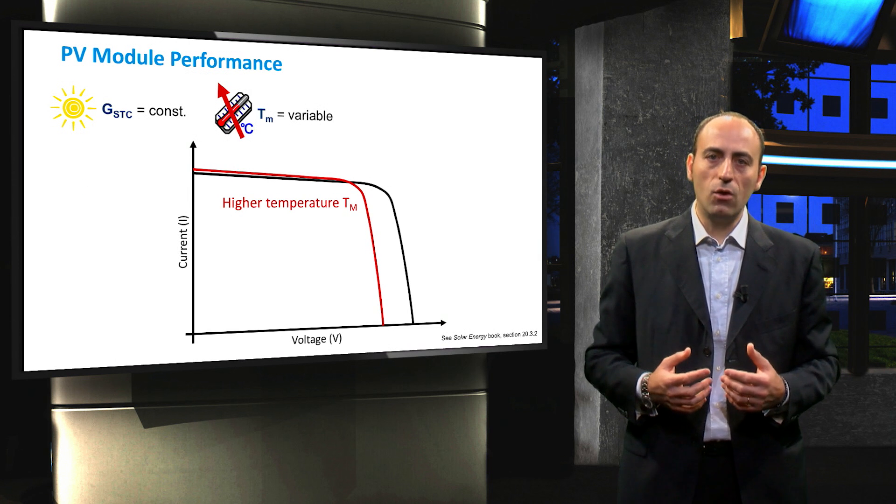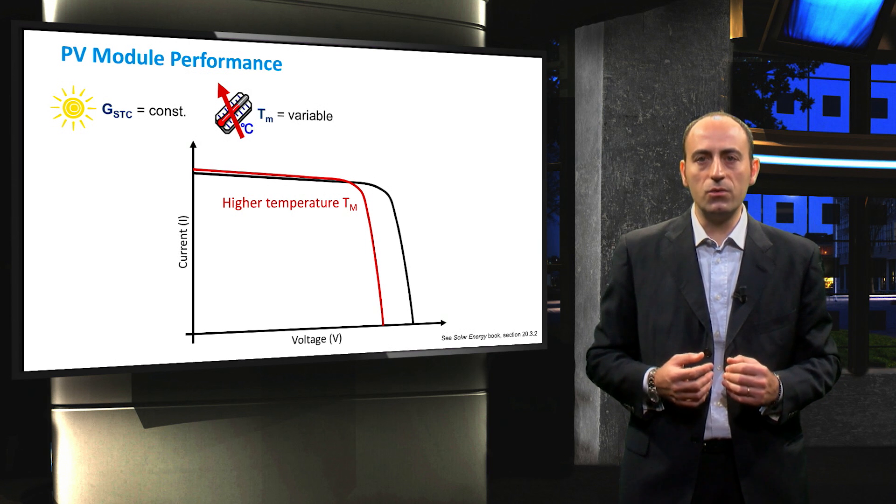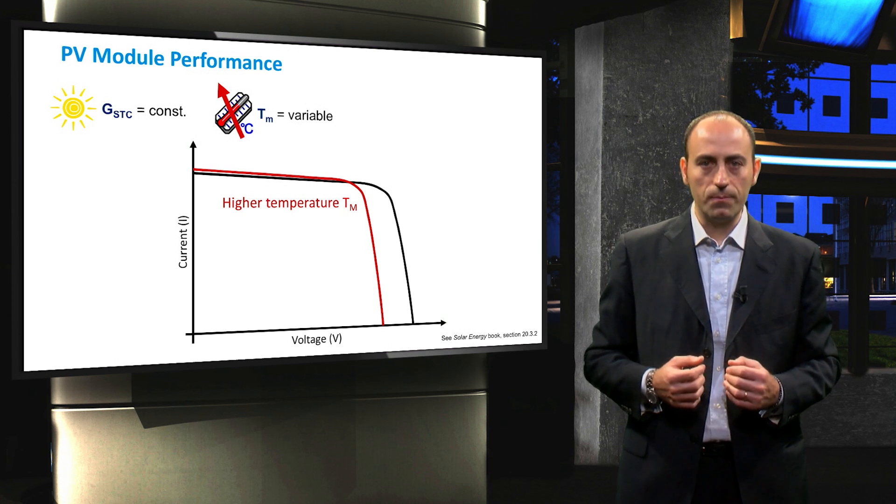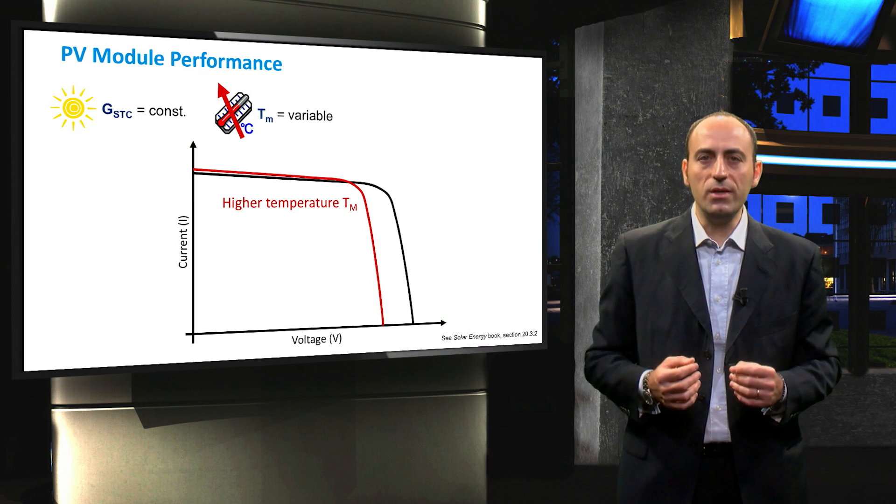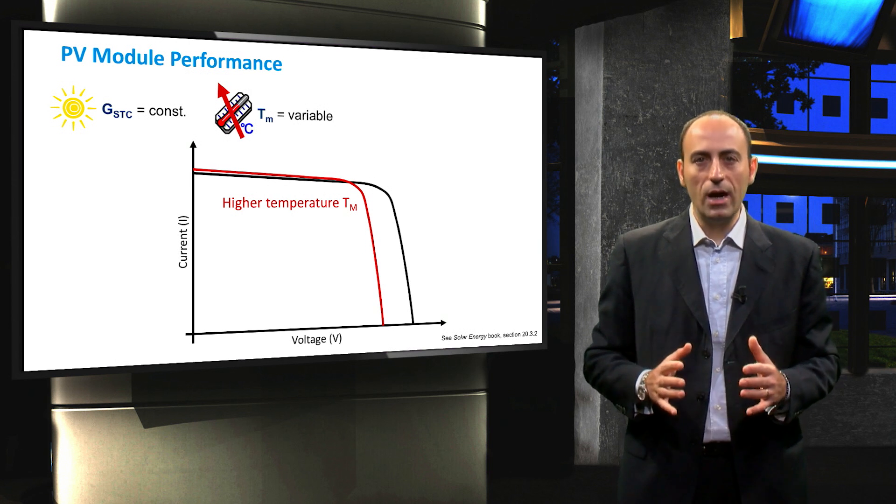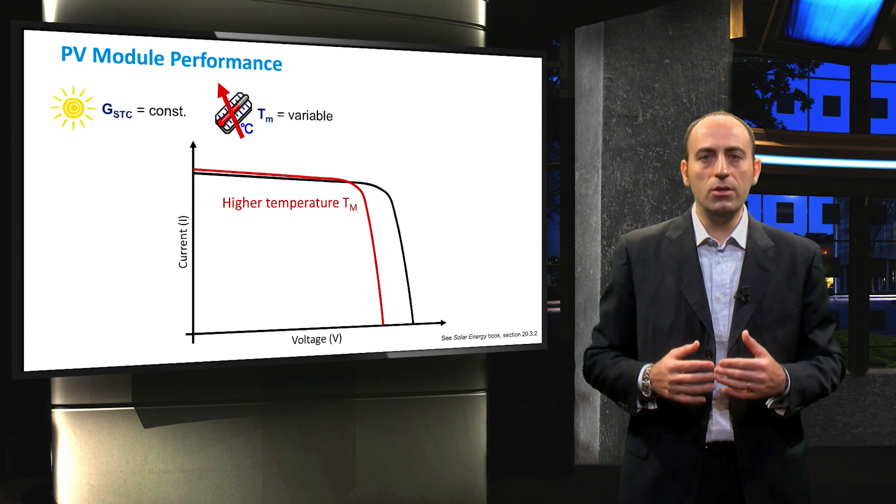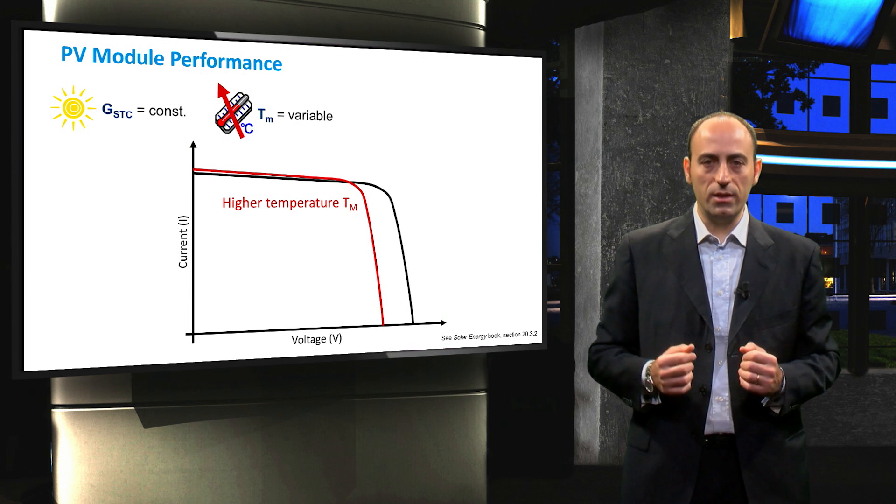The effect of increasing cell temperature leads to a shift of the IV characteristic towards lower voltage values. Note that the slight increase in the short circuit current at higher temperatures is completely outweighed by the decrease in open circuit voltage, and hence, the overall effect is a decrease in efficiency.